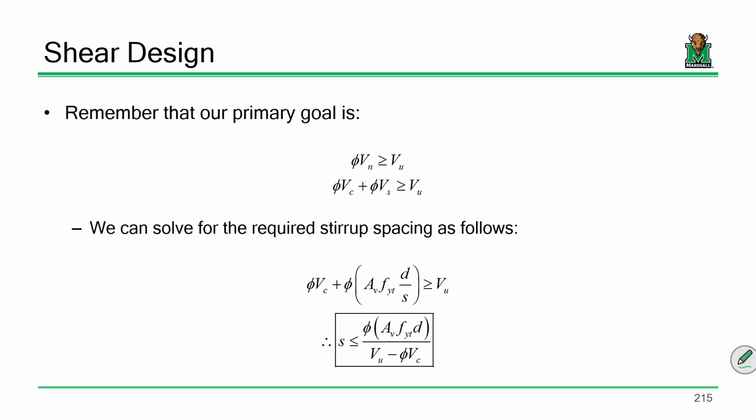Our base expression comes from the fundamental LRFD equation that states the design resistance phi VN has to be greater than or equal to VU. Since phi VN equals the capacity of the concrete plus the capacity provided by the steel, and we're solving for stirrup spacing, we just solve for S. We recognize that VS is the area in shear times FY times D divided by S. Do a little algebra, rearrange, solve for S, and we get the expression you see below.